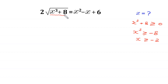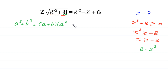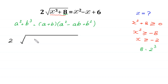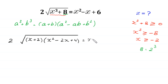Because 8 is equal to 2 cubed, we can use the algebraic identity a cubed plus b cubed equals a plus b times a squared minus ab plus b squared. So 2 times square root of x cubed plus 8 becomes 2 times square root of (x plus 2)(x squared minus 2x plus 4), which equals x squared minus x plus 6.